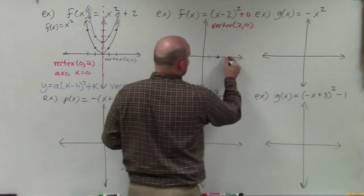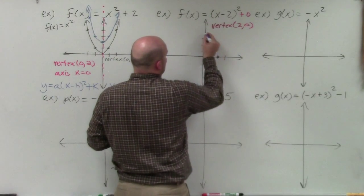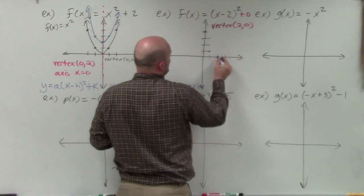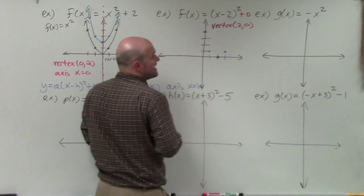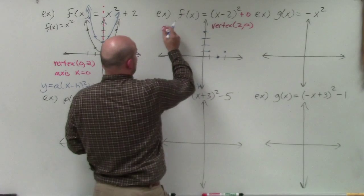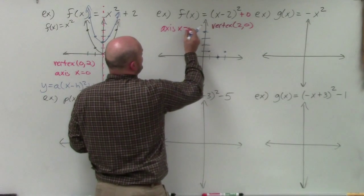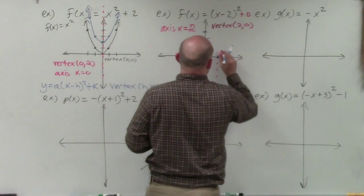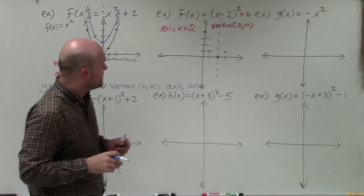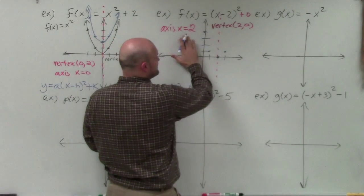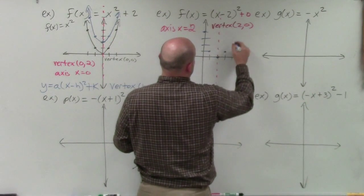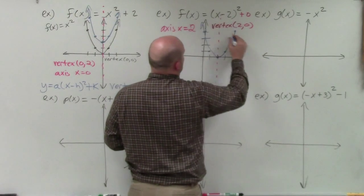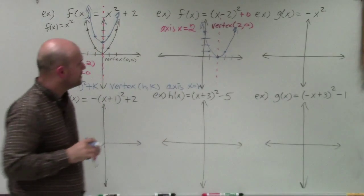All I need to do is follow the same pattern as my parent graph: go over 1, up 1, over 2, up 4. The axis of symmetry is x equals h, which in this case is 2. I draw a nice vertical line there, and whatever points are to the left, I can reflect over to the right, then connect to make this nice U-shaped graph.